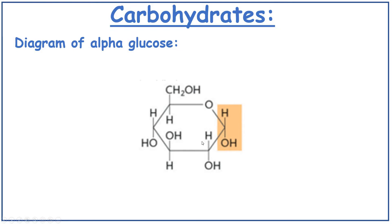You've got H on carbon 2 facing upwards, OH downwards. Carbon 3, you've got an OH upwards, H downwards. Carbon 4, an OH downwards, H upwards. On carbon 5, you've got H facing downwards and then a CH2OH group. So the key thing about alpha glucose is that on carbon 1, the H faces upwards and the OH faces downwards.